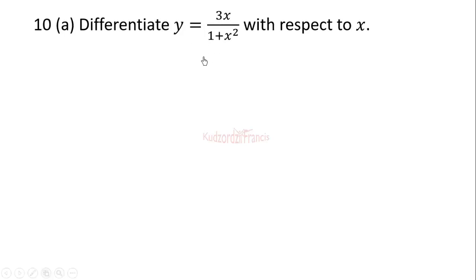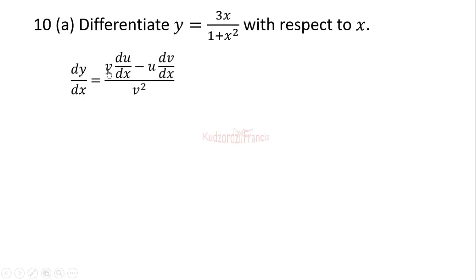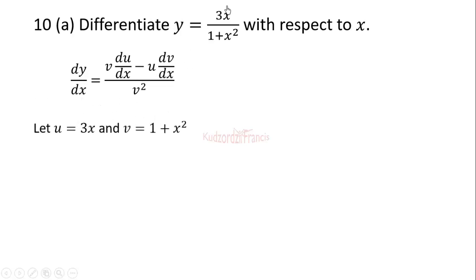The quotient rule is given by dy/dx equals v·du/dx minus u·dv/dx, all over v squared. We let u equal 3x and v equal 1 plus x squared.